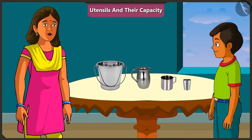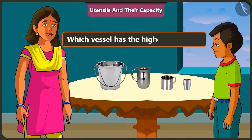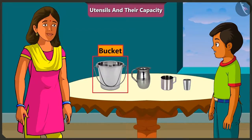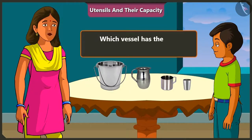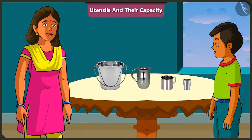Great. Mishtu, now tell me which of these vessels has the greatest capacity? The bucket has the most capacity. And which vessel has the least capacity? Here the smallest vessel is the glass, so the glass has the least capacity.